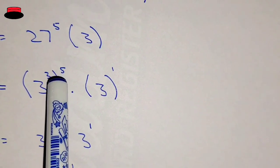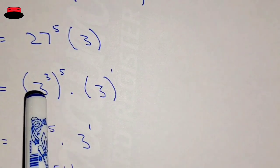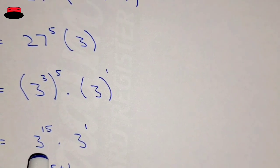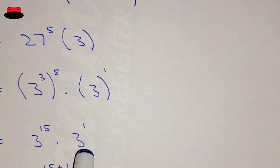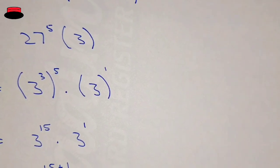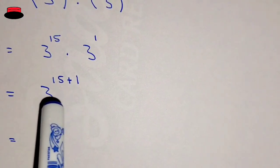Now these two powers can be multiplied. We know that (3^3)^5 = 3^15, so 3^15 × 3. When the bases are the same, the powers are added. Therefore, 3^(15+1).